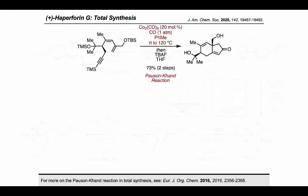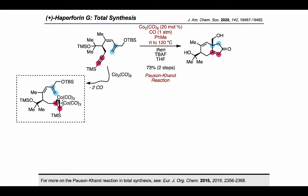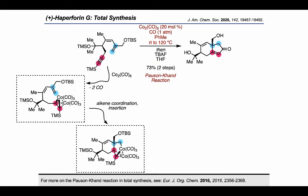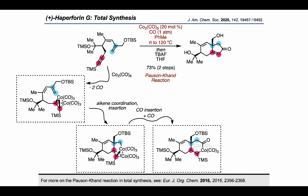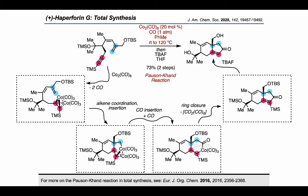Having reached this enyne, the authors employed a catalytic Pauson-Kahn reaction to form the cyclopentenone product shown. This presumably occurred by reaction of dicobalt octacarbonyl with the alkyne to form a tetrahedral intermediate, which underwent an alkene coordination and insertion event, followed by a CO insertion to install the carbonyl group, and finally a ring closure to form the cyclopentenone, after which a TBAF deprotection removed the silyl groups.